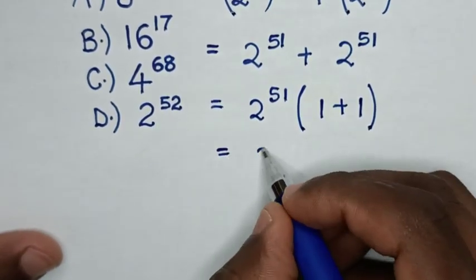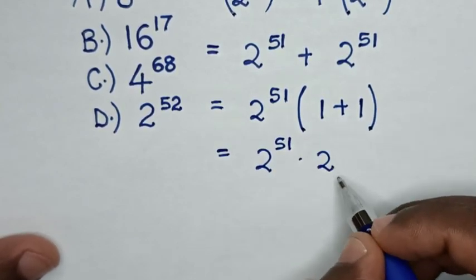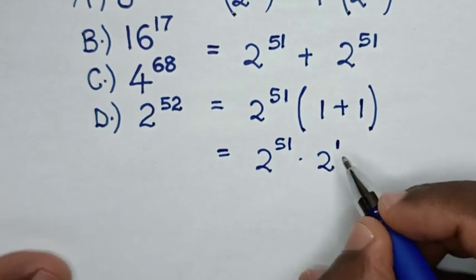This equals 2 power of 51 times, bracket 1 plus 1, which is 2. This 2 is the same as 2 power of 1.